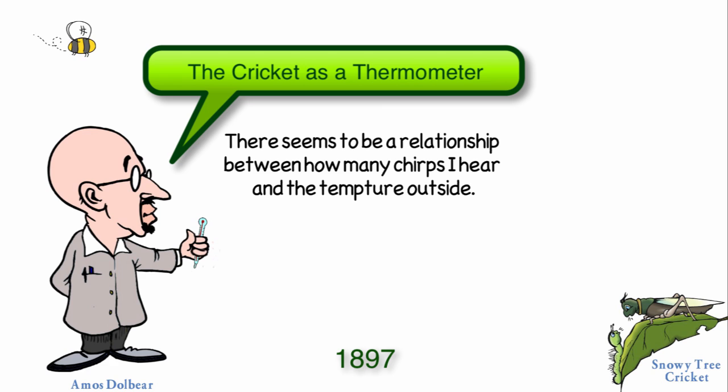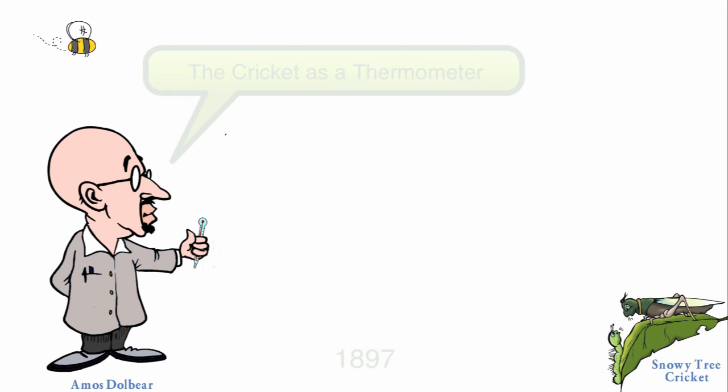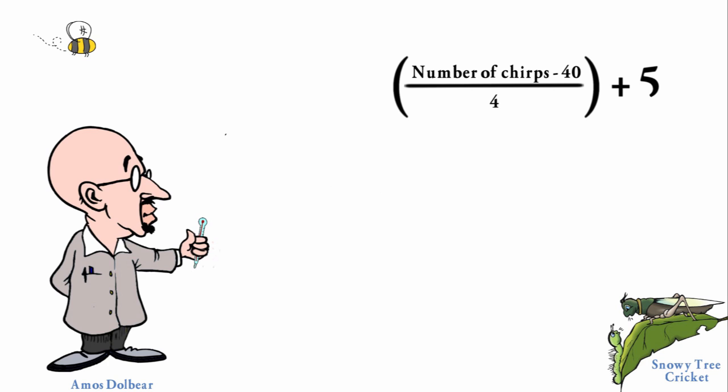In it he described the relationship between the outside temperature in Fahrenheit and the number of chirps the cricket makes in one minute. He found that if you take the number of chirps in one minute, subtract 40 from it, divide that by 4, and then add 50, you find the temperature in Fahrenheit.